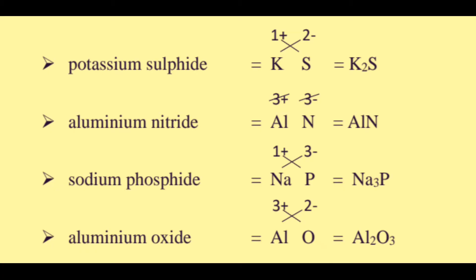Aluminum oxide. Aluminum has oxidation number 3 plus. Oxide is O with oxidation number 2 minus. 3 plus and 2 minus — cross the numbers: Al gets subscript 2 and O gets subscript 3. The formula for aluminum oxide is Al2O3.